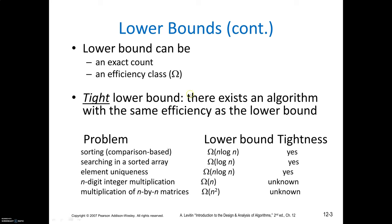An algorithm has a tight lower bound if its efficiency is the same as that of the lower bound. For example, if the lower bound for sorting is n log n (base 2), is this a tight lower bound? Yes, because merge sort has complexity n log n (base 2). For searching in a sorted array, if the lower bound is log n (base 2), is it tight? Yes, because binary search requires at most log n (base 2) comparisons in the worst case.